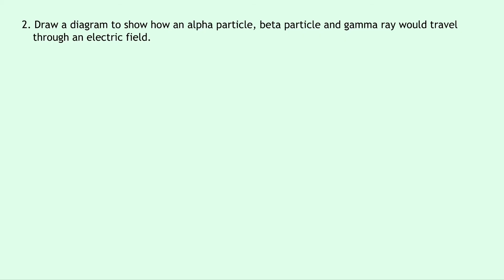Question two says to draw a diagram to show how an alpha particle, beta particle and gamma ray would travel through an electric field. Well what we need to do first of all is recap what an alpha particle, beta particle and gamma ray are from the radiation topic.